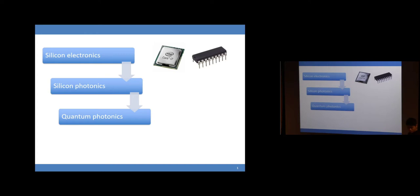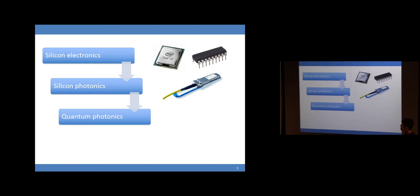OIC is very strong in classical silicon photonics. For silicon photonics, there are already commercial products — for example, Intel and IBM have one-gigabyte-per-second silicon photonics transceivers. The next step further is quantum photonics. Why do we want to do that? We want more secure transmission and communication, and also more powerful computing. That's why people are thinking about how to use quantum technology for real daily applications.